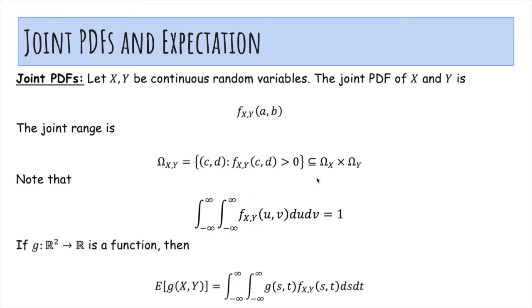The expected value of g(x,y) is g(s,t) times the density function at s and t from negative infinity to infinity.